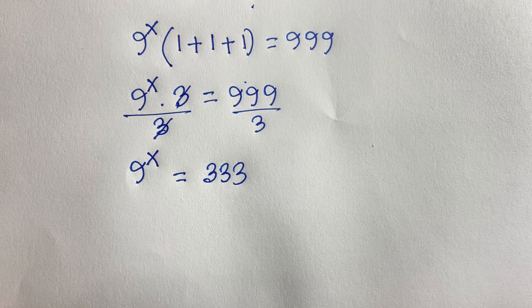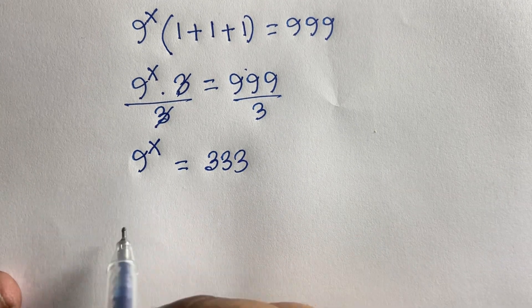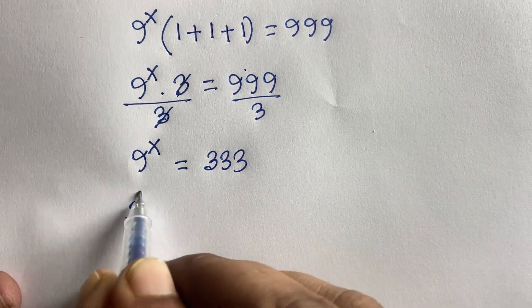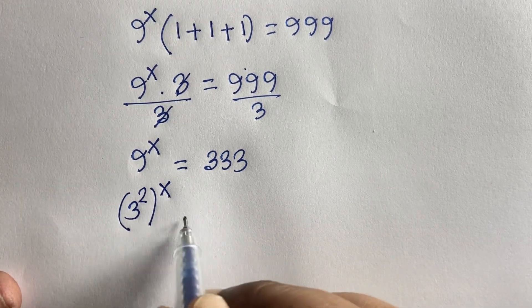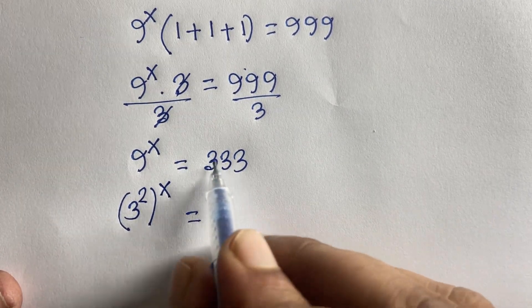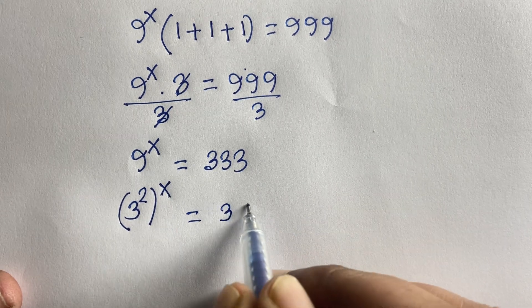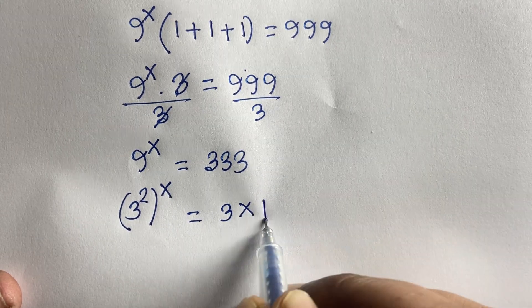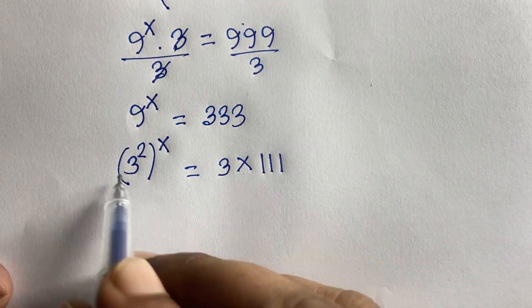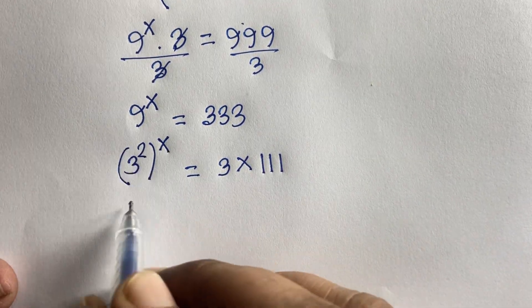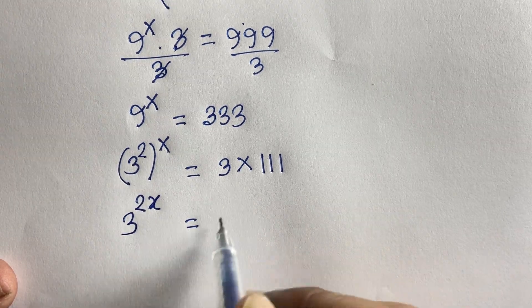Now I rewrite 9 as 3², so (3²)^x = 333, which gives 3^(2x) = 333. And 333 = 3 × 111, so 3^(2x) = 3 × 111.